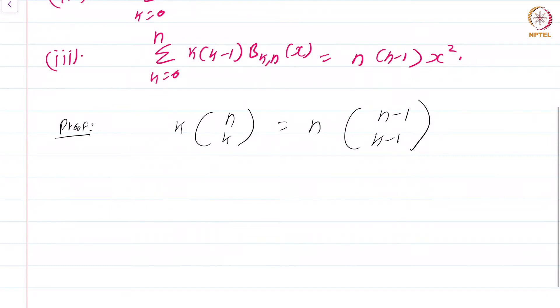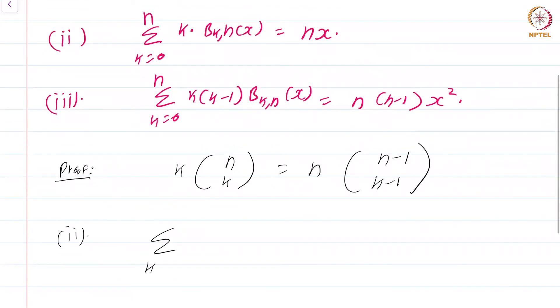Let us proceed to proof of the second part, proof of the second part because the first part we have already seen a proof. So, we have to consider summation k equals 0 to n of k times b_k,n of x. We want to analyze this quantity.